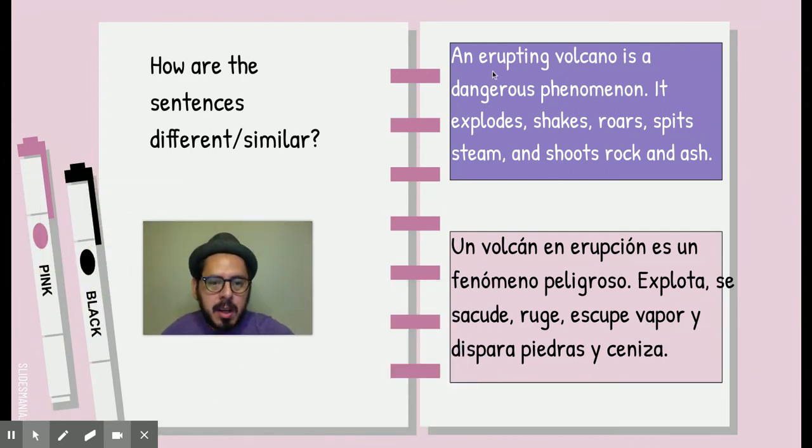Primero dice an erupting volcano is a dangerous phenomenon. Tenemos un artículo ahí. Se parecen bastante. Uno dice en y otro dice un. Nada más que aquí, por ejemplo, volcano. En inglés tenemos el adjetivo primero y luego el sustantivo. Y en español es al revés. Tenemos el sustantivo primero y luego lo que está describiendo.